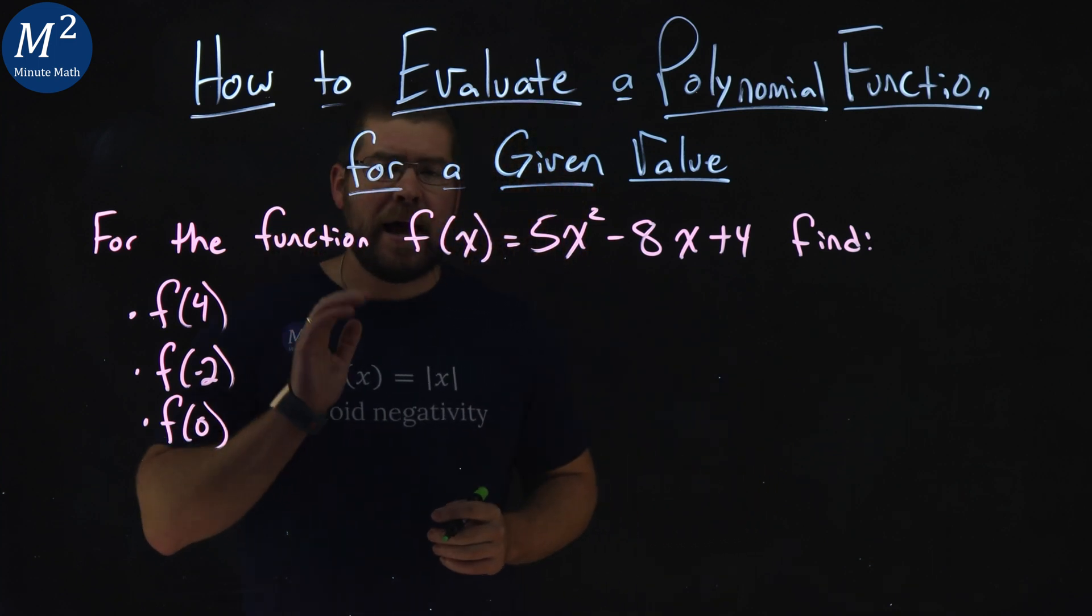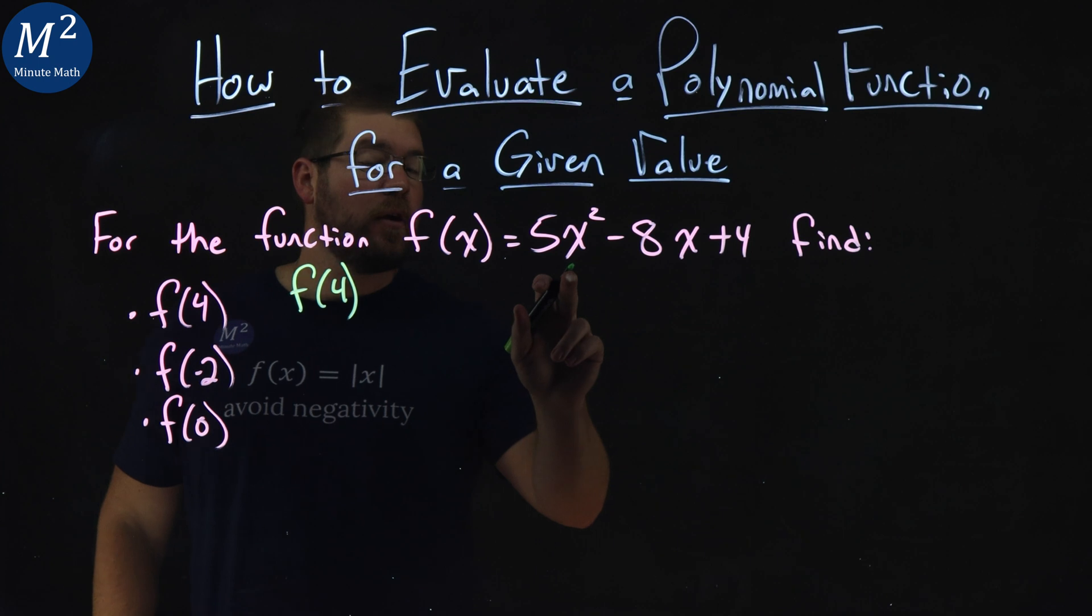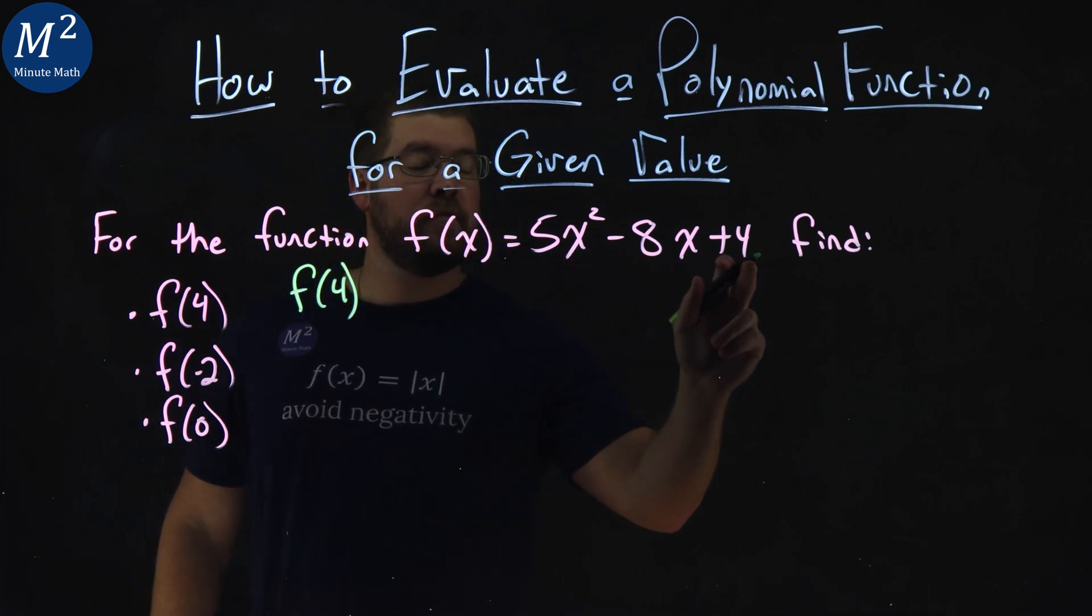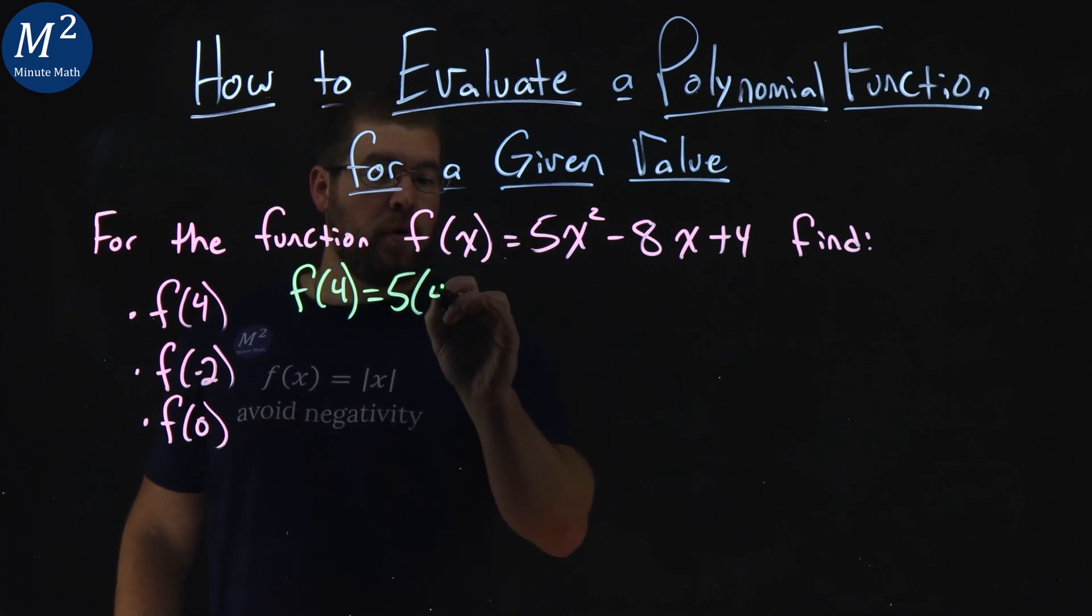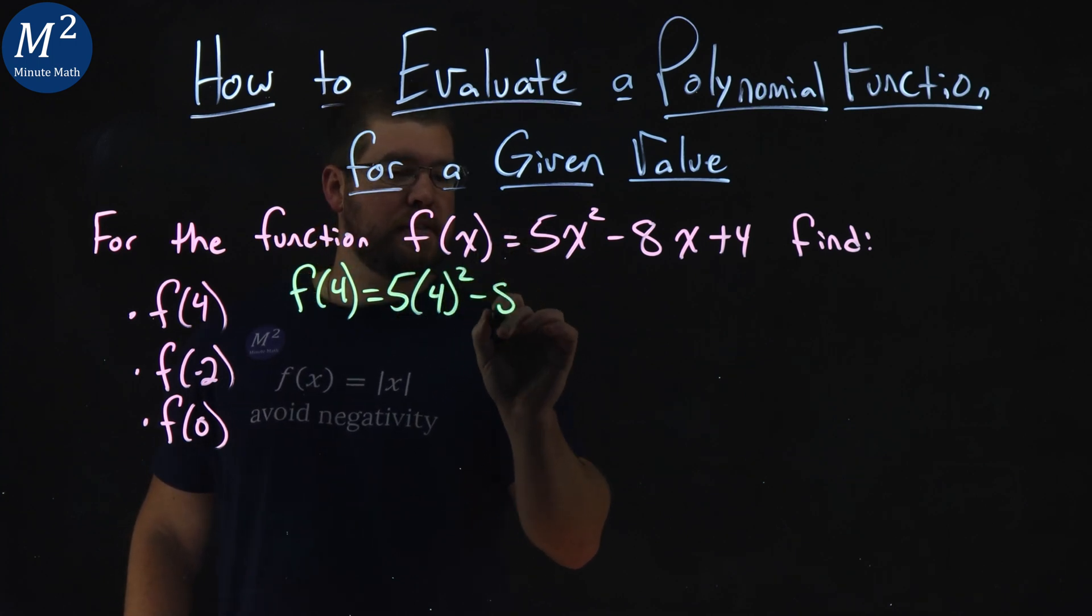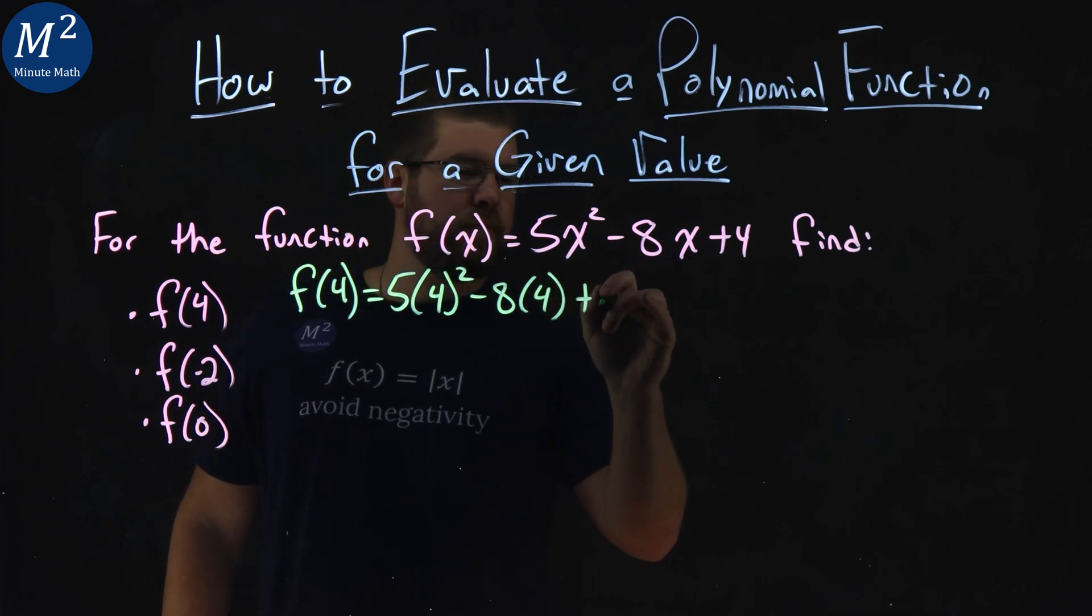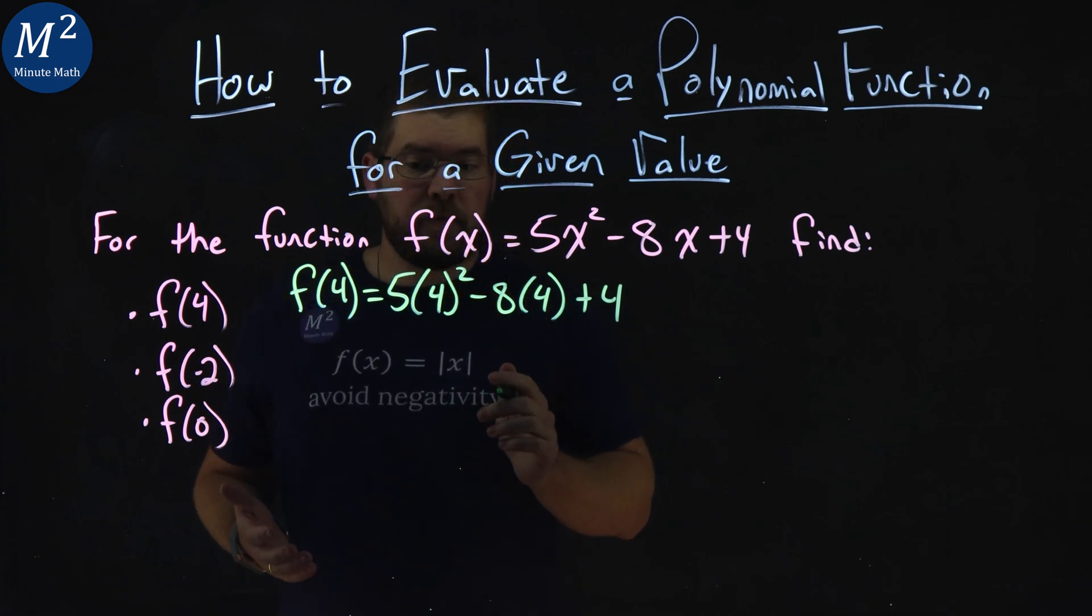We'll start with the first one, f(4). I'm going to write f(4) here. I'm going to take my original polynomial function and substitute 4 in for each x value. So let's do that: 5 times 4 squared minus 8 times 4 plus 4. And now all we have to do is simplify this.